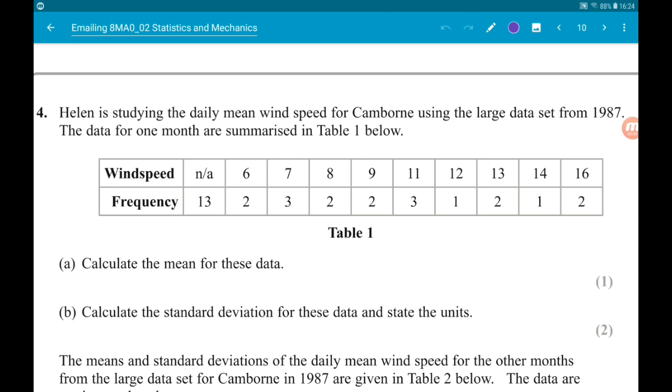The data for one month is summarized in the table. Part A wants us to find the mean. Part B wants us to find the standard deviation. Now our calculators can do this for us. We can even put frequency tables in. That's a little bit complicated, but not too much.